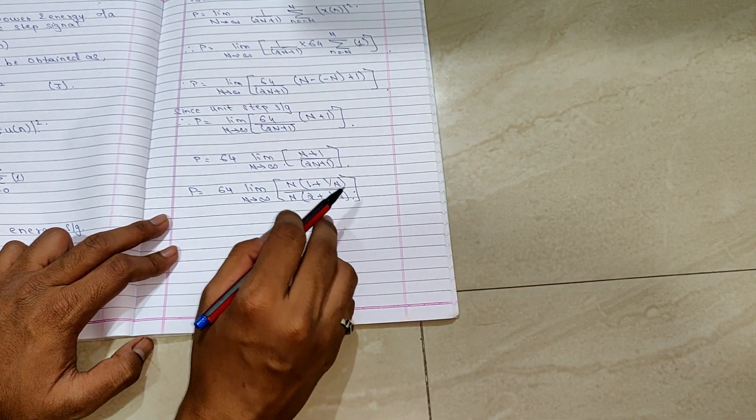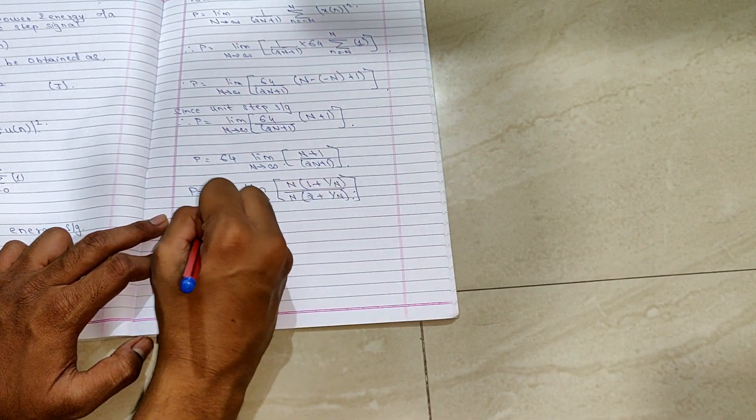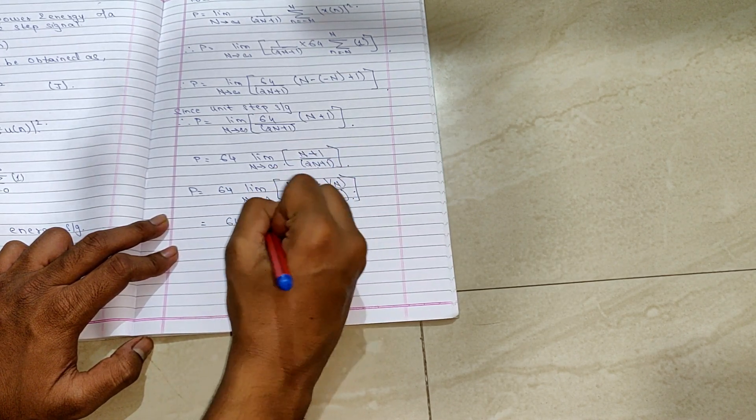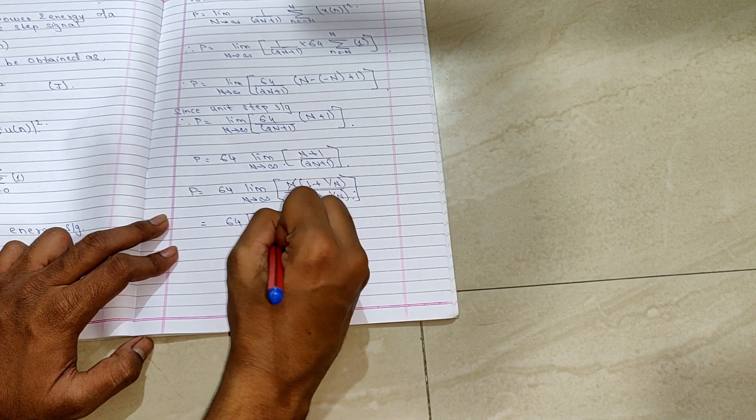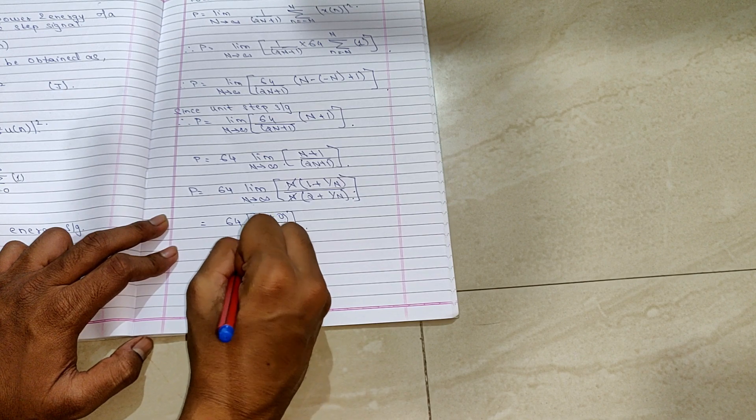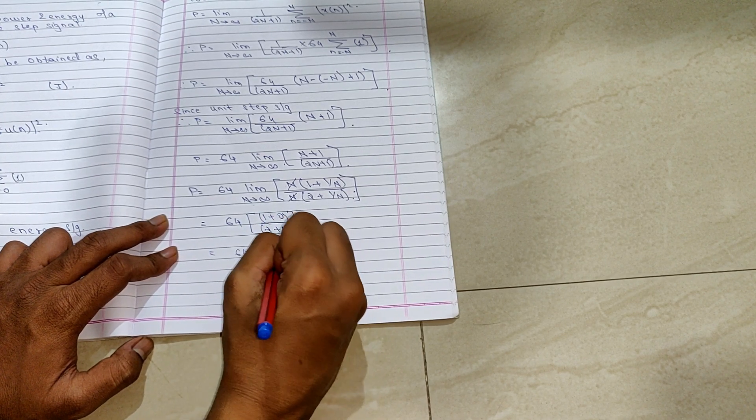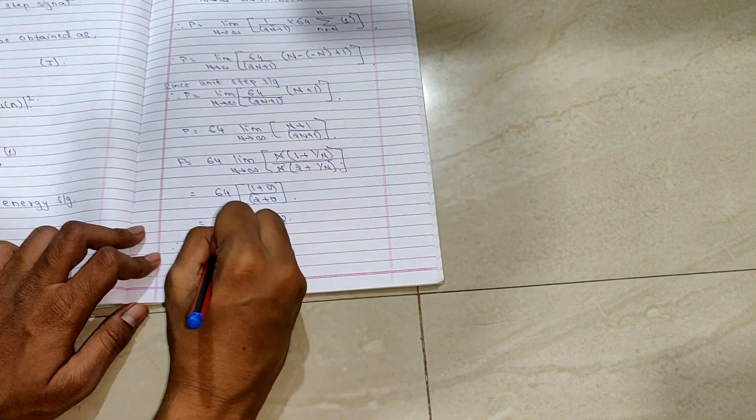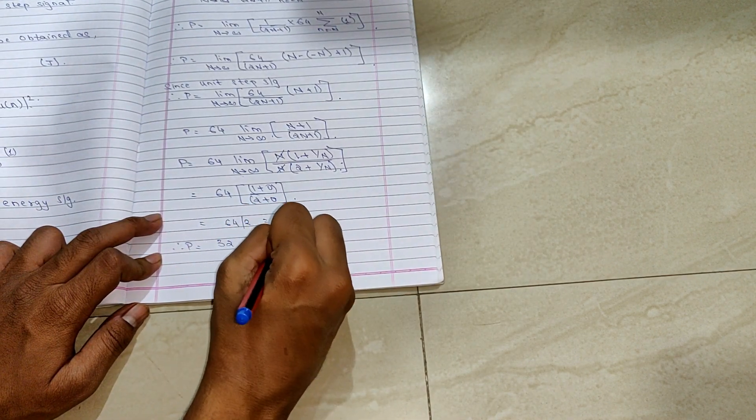So now substitute your limit. So 1 upon infinity will be 0. And n gets cancelled. So 64, 1 plus 0 and this will be 2 plus 0. So it will be 64 by 2, which will be 32. Therefore my power is 32 watts.